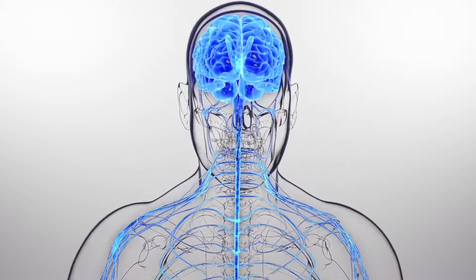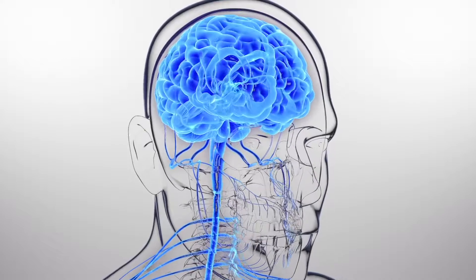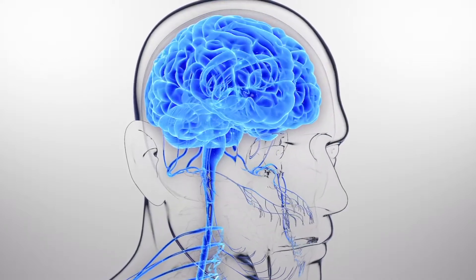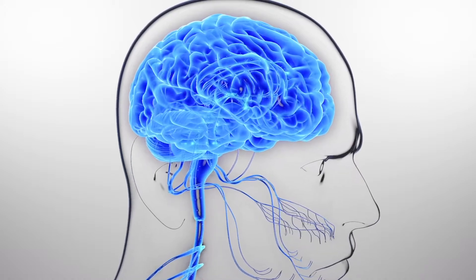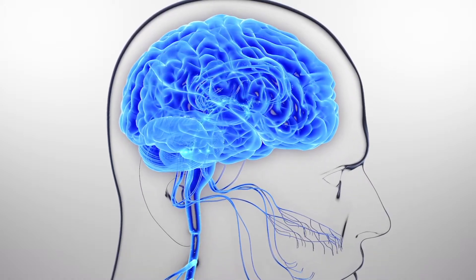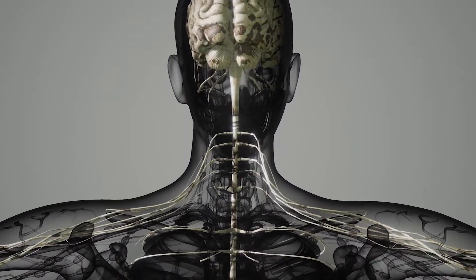These divisions are called the central nervous system and the peripheral nervous system. The central nervous system, or CNS, is the control base for the whole nervous system. It consists of the brain and the spinal cord, which are surrounded by three membranes called meninges.